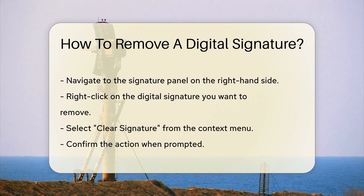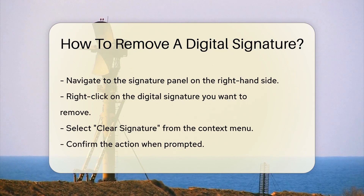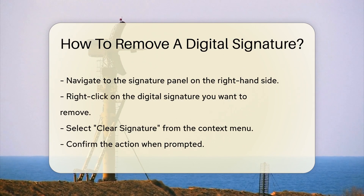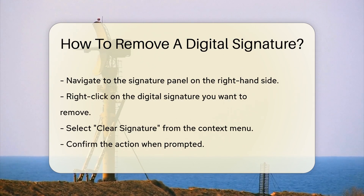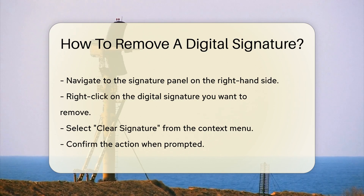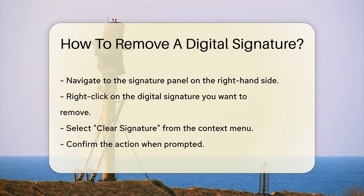In Adobe Acrobat, open the document that contains the digital signature. Navigate to the Signature panel on the right-hand side. Right-click on the digital signature you want to remove. Select Clear Signature from the Context menu.